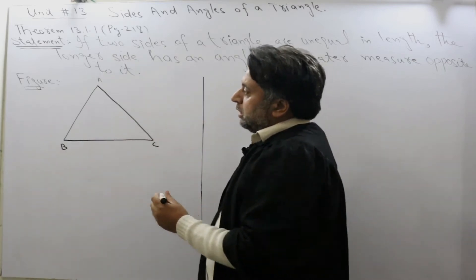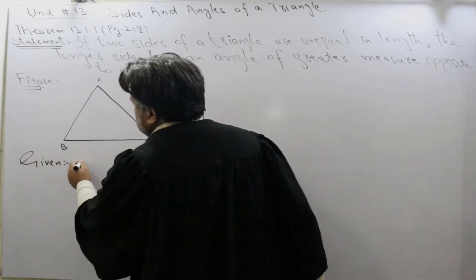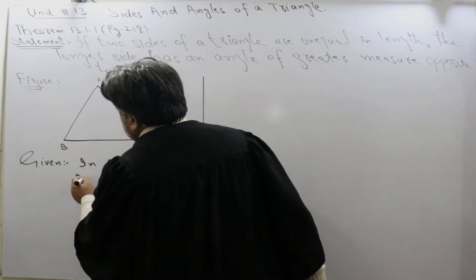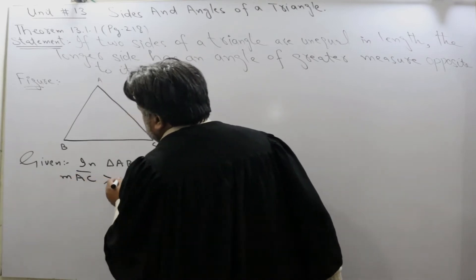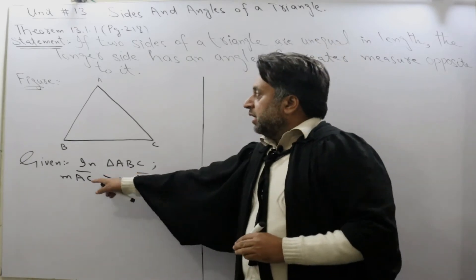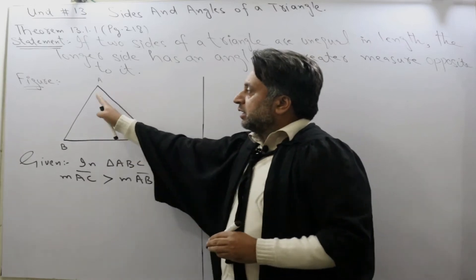Now, given is what? In triangle ABC, AC is greater than AB. The side AC is greater than AB.